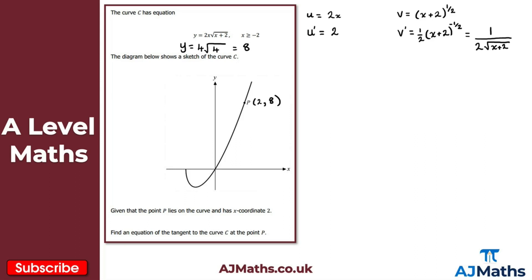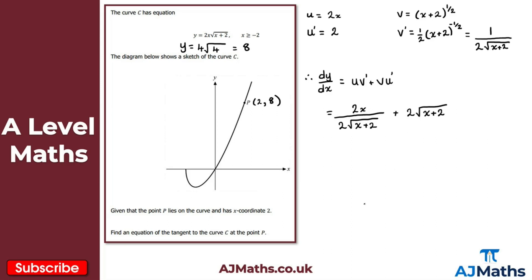Using the product rule, dy/dx equals u·v prime plus v·u prime. So I have 2x multiplied by 1 over 2√(x+2), giving 2x over 2√(x+2), plus 2·√(x+2). Simplifying by cancelling 2, I get x over √(x+2) plus 2√(x+2).